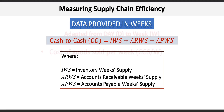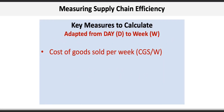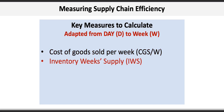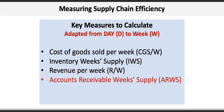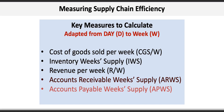To accomplish this, we're going to have to calculate more than just those three constituent components. The key measures we're going to calculate in this video include cost of goods sold per week, inventory week supply, revenue per week, accounts receivable week supply, accounts payable week supply, and the cash-to-cash conversion cycle.